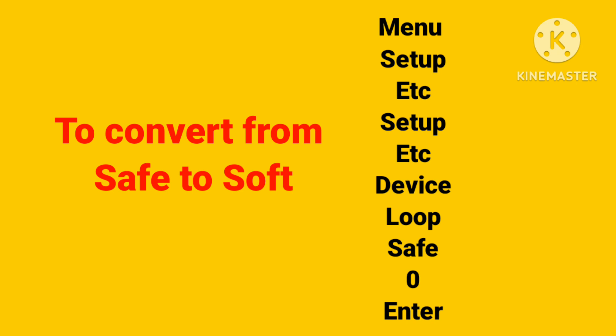If you want to convert from safe back to soft — the normal mode is called soft address — the process is the same: go to Menu → Setup → ETC → Setup → ETC → Device → Loop → then Safe, and put 0 to revert the device to a soft address.